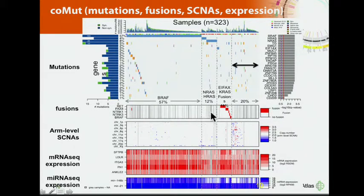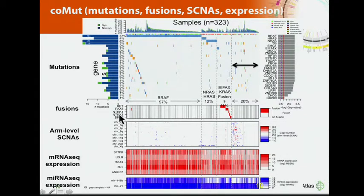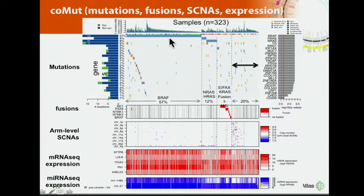We can see the fusions — RET fusions are the most common, but we're also picking up some Pax8-PPARγ, TRK, and a few BRAF fusions. Again, these are mutually exclusive with BRAF and RAS.